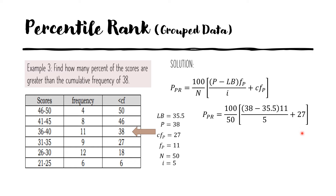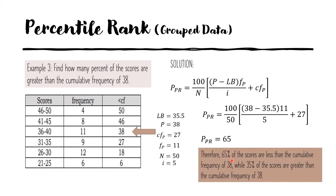Working through the calculation on a calculator: first solve 38 minus 35.5, multiply the result by 11, divide by 5, add 27, then multiply by 2. This gives us 65. Therefore, 65% of the scores are less than the cumulative frequency of 38, while 35% of the scores are greater than the cumulative frequency of 38.